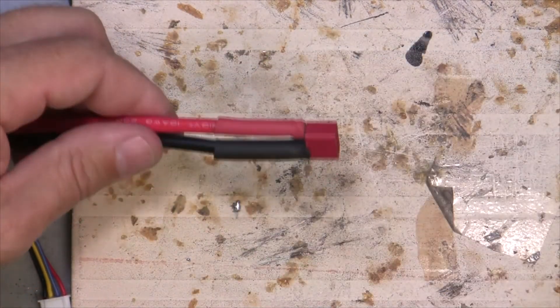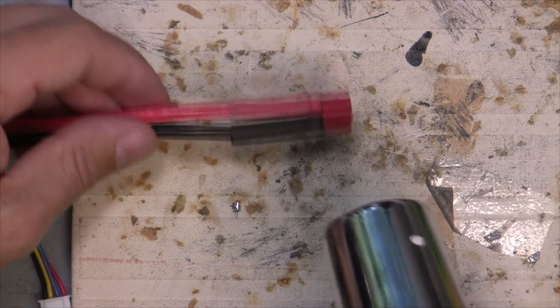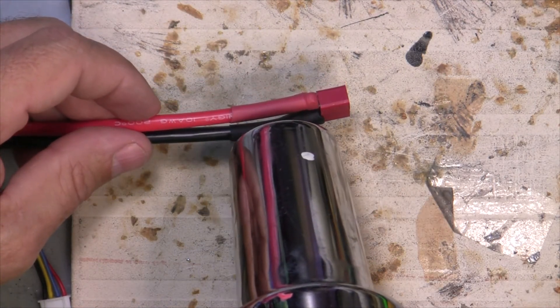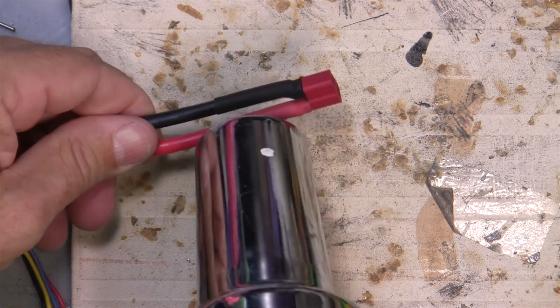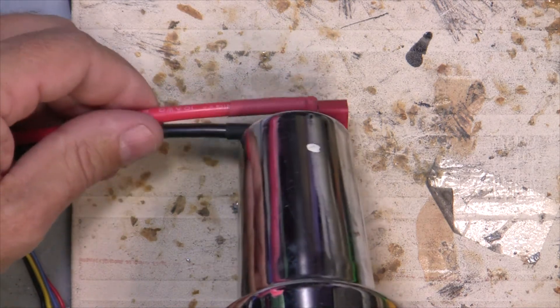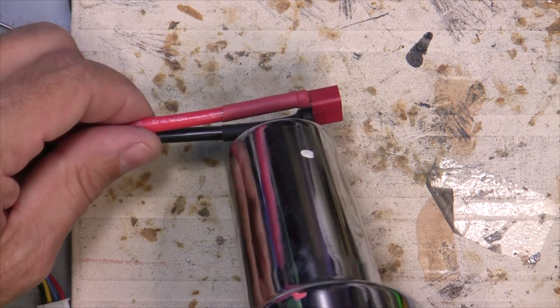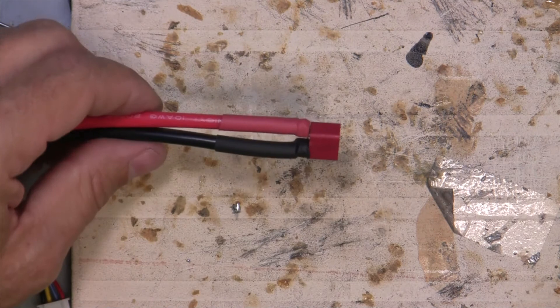So then we're just going to slide our shrink tubing over the negative, push that down nice and far. Right on. Heat gun.